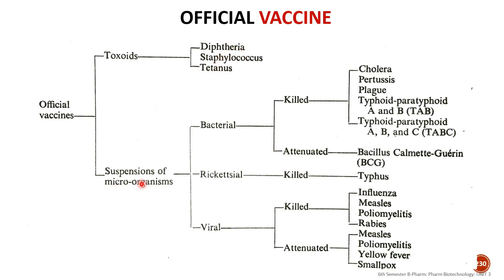The second category is suspension of microorganisms. According to the microorganism type, we can classify suspensions into bacterial suspension, rickettsial suspension, and viral suspension. Bacterial suspension can be further divided into killed bacterial suspension or attenuated bacterial suspension. Examples of killed bacterial suspensions include cholera vaccine, pertussis, plague, typhoid, paratyphoid A and B (TAB), and TABC.